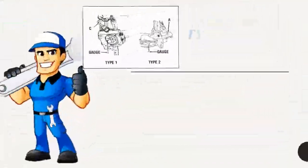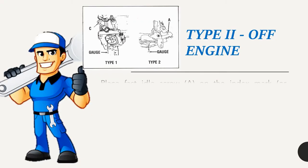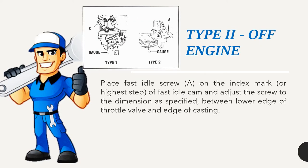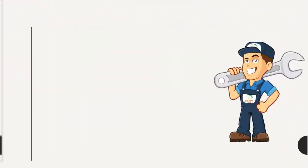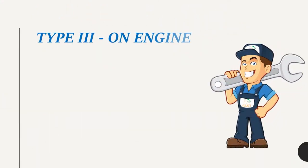Type 2 — off engine: Place fast idle screw A on the index mark or highest step of fast idle cam and adjust the screw to the specified dimension between lower edge of throttle valve and edge of casting.